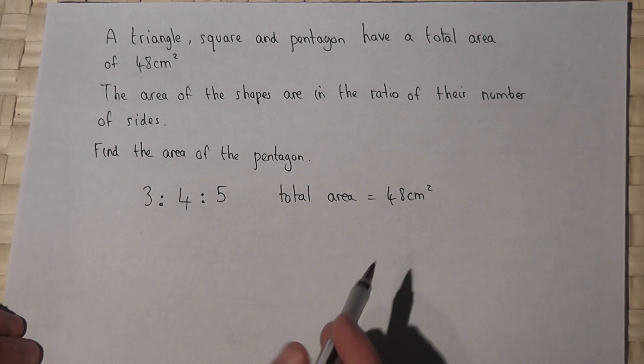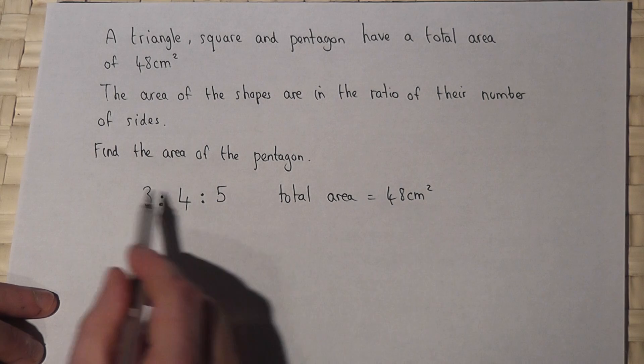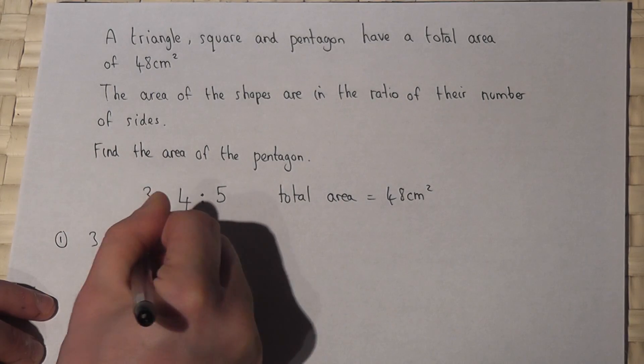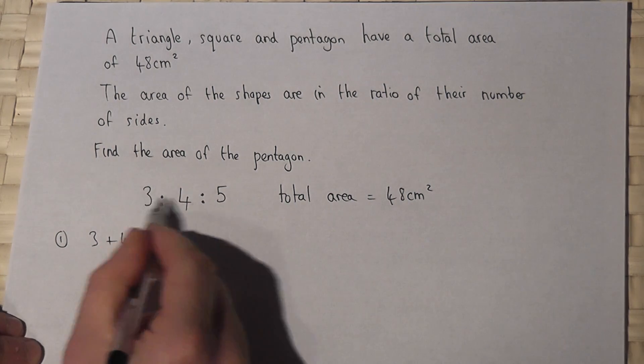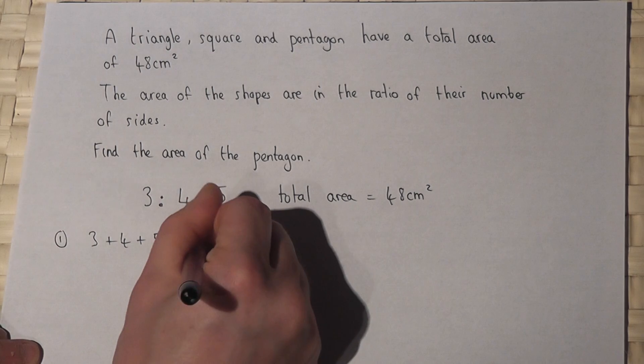Now there's lots of ways of solving this, but probably the simplest is to share this amount into the given ratio. So if I work out 3 plus 4 plus 5, if I add together the parts of the ratio, 3 plus 4 is 7 plus 5 equals 12.